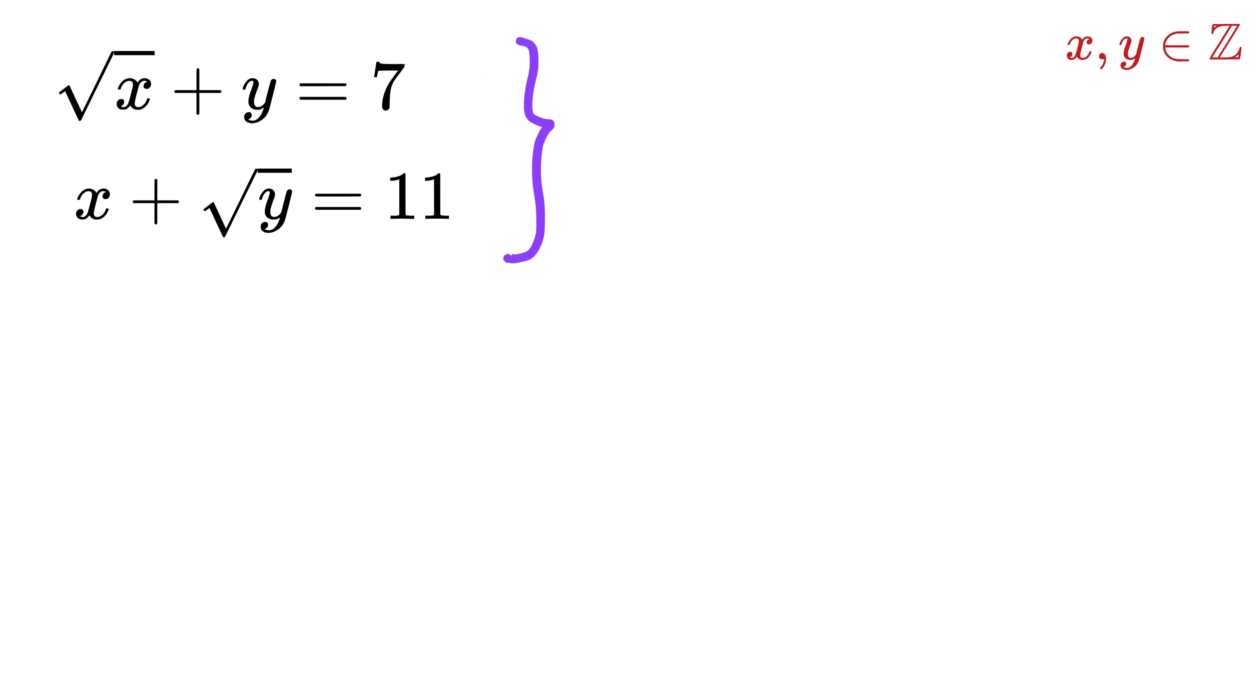Now look, from here you might say the square root of x is 7 minus y, so squaring both sides will give us x equals (7 minus y) whole square. Now if you substitute the value of x as this in this equation, you will get this. Then expand this using (a minus b) whole square formula to get this.